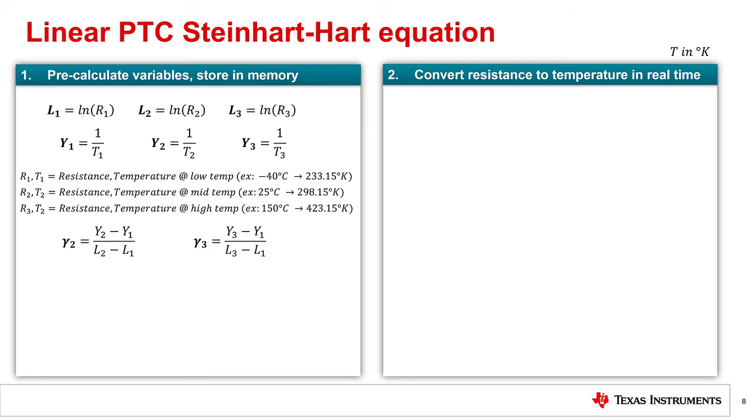In this example, we picked negative 40, 25, and 150 degrees Celsius because we want to use the thermistor across its whole operating temperature range. Next, gamma 2 and 3 need to be calculated from the Y and L values to finally be able to calculate your static coefficients A, B, and C. That is all that is needed to set up the Steinhart-Hart equation.